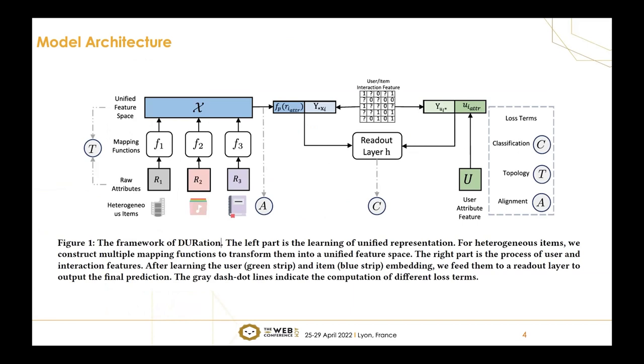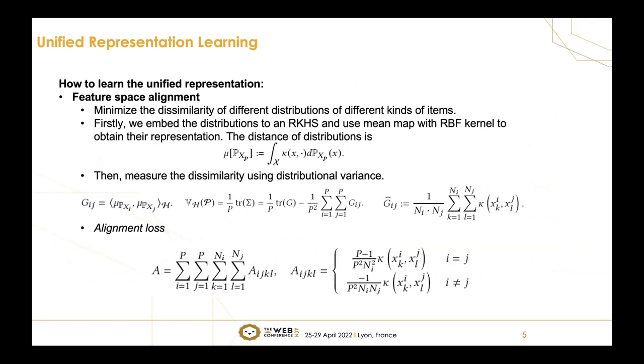The main problem is how to learn the unified representation. There are three key points. First, we want to align the different kinds of items in the unified feature space. In other words, we want to minimize the dissimilarity of different distributions of different kinds of items. Therefore, the first step is to embed the distribution to a reproducing kernel Hilbert space and use mean map with RBF kernel to obtain their representations. Here, mu is mean map and kappa is RBF kernel.